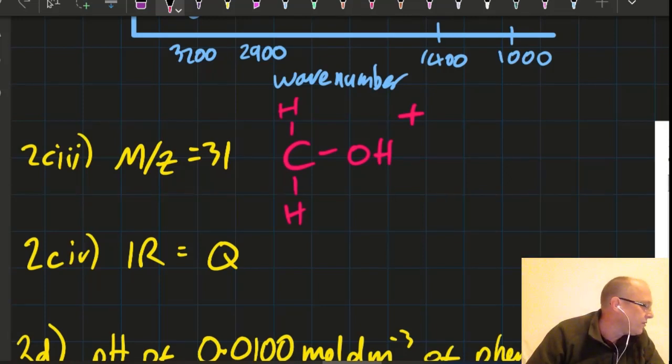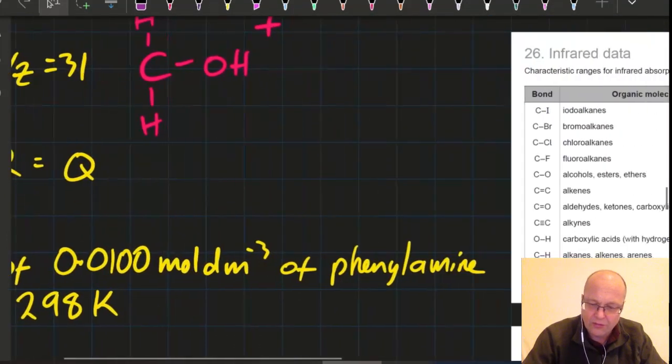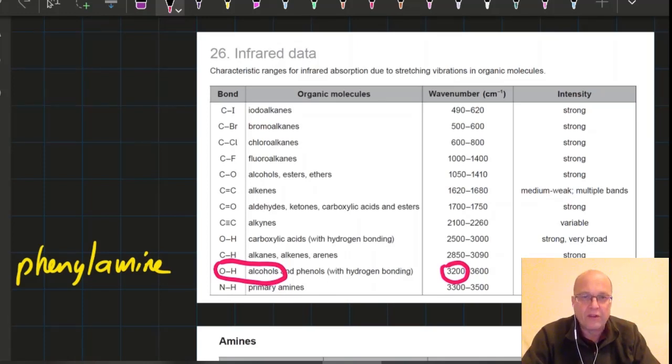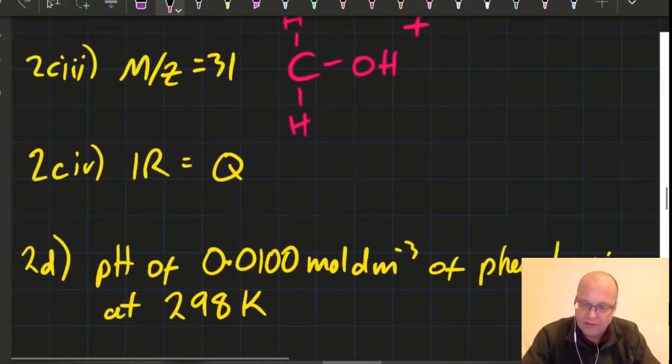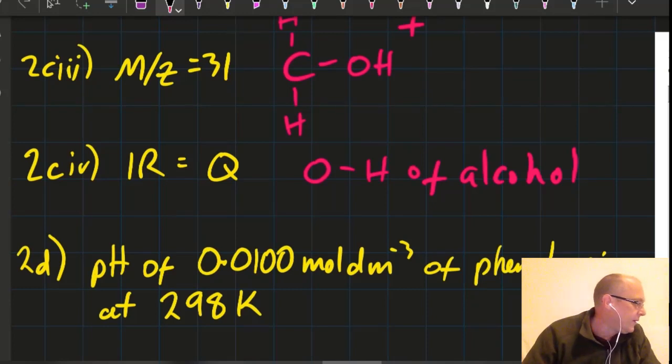And what is Q? Using section 26. So Q's at 3200. So 3200, that's going to be the OH bond. Don't forget, infrared tells you about bonds. Is it the OH bond, the CH bond? What bond is it? So I think it's going to be the OH bond of the alcohol. Oxygen, hydrogen. Nice.